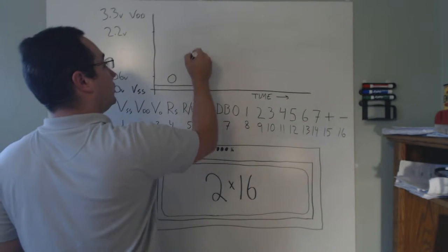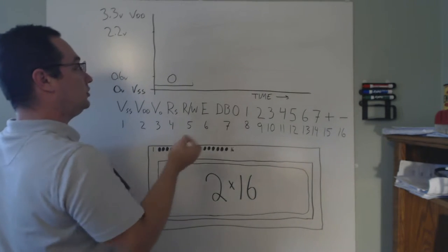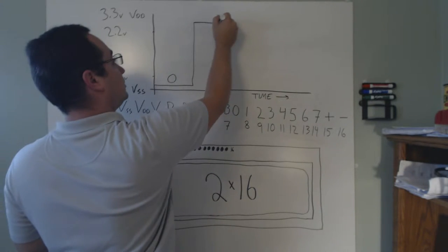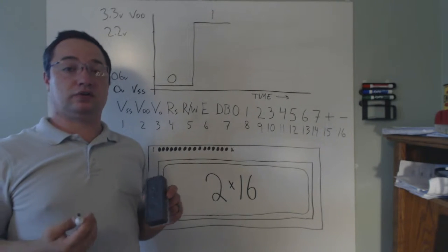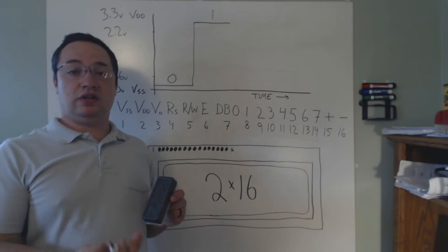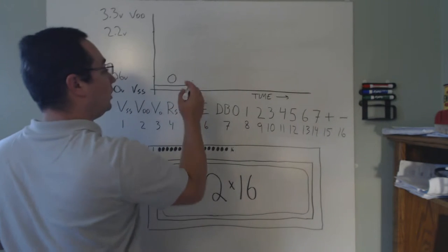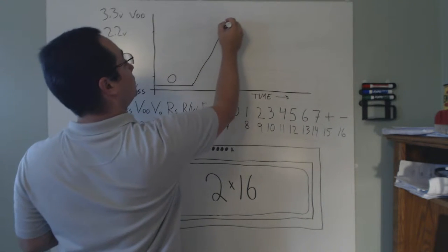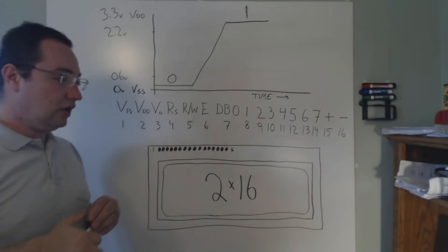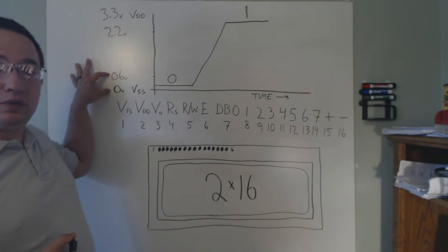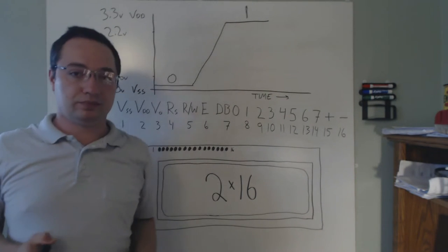You might be tempted to draw a line that goes straight up to represent a transition to a one, but in the real world nothing happens instantly. Instead of a perfectly vertical transition, you'll have a line that transitions at an angle. So to summarize: any voltage between 0 and 0.6 volts represents a zero, and any voltage between 2.2 and 3.3 volts represents a one.